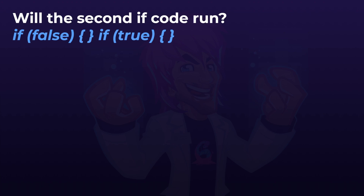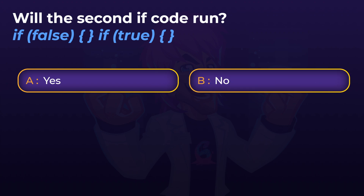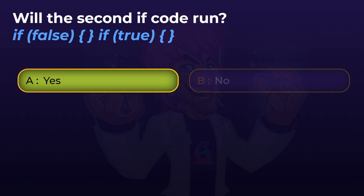Next up: will the second if statement run in this code? Look at your parentheses, look at your curly braces, look at the values, make sure you understand this code and what would run. The answer is yes, it would run. If you look carefully, the first if statement evaluates to false, which means the code inside of the curly braces does not run. However, the second if statement comes after the first if statement — it isn't inside of the code block of the first if statement. So this is equivalent to having two if statements one after the other. The second if statement is true, and so would run.